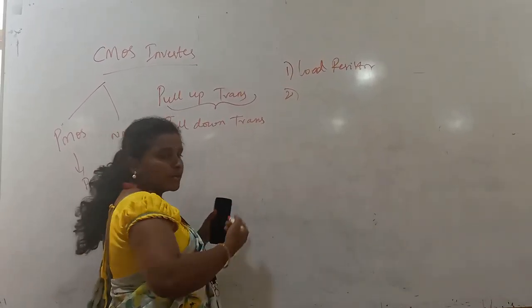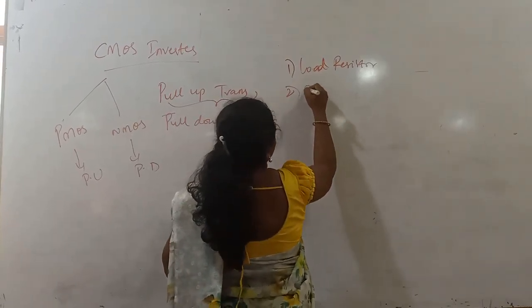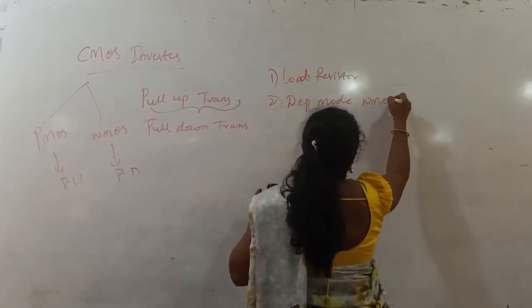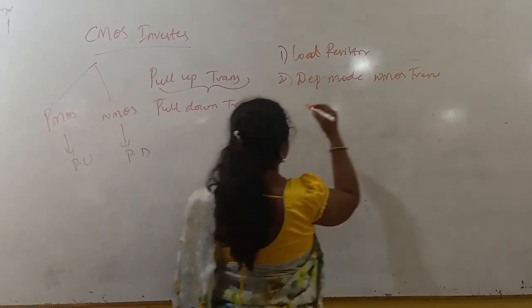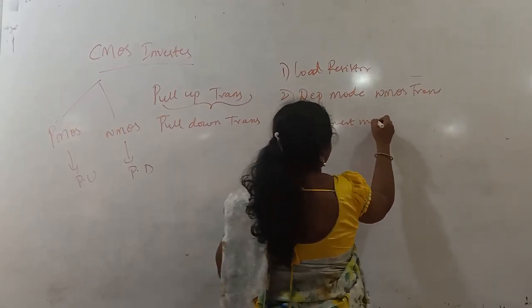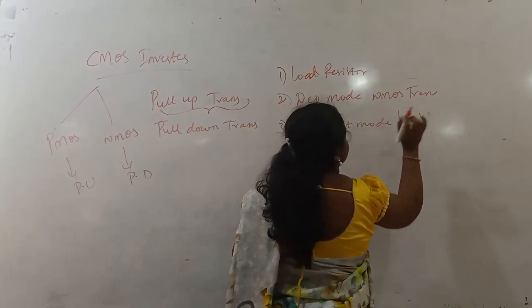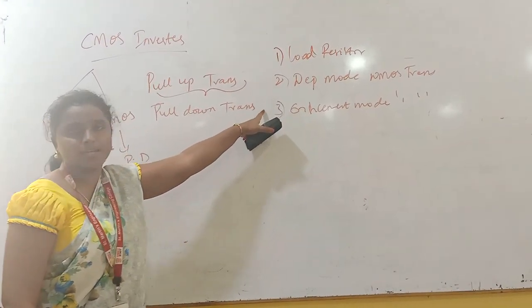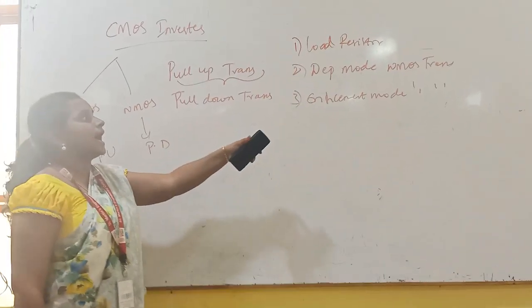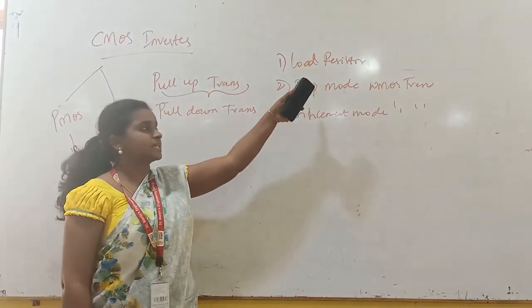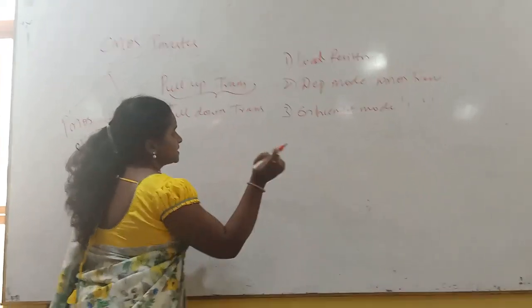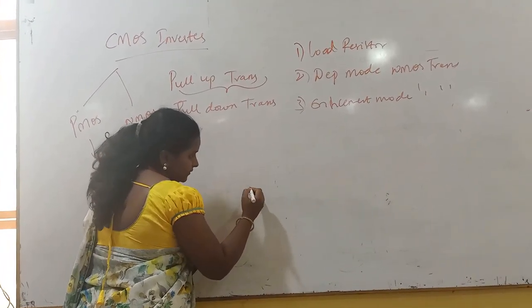What we are going to have is, in the pull-up transistor only, we will be having the changes. The first one will be the load resistor. The second one will be the depletion mode NMOS transistor. And the third one is the enhancement mode NMOS transistor. After seeing these 3 different various pull-ups, then we will be going for the CMOS inverter.